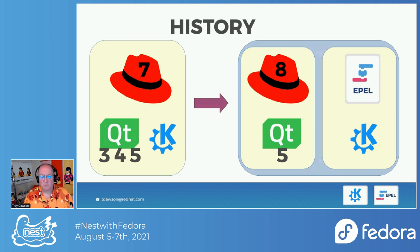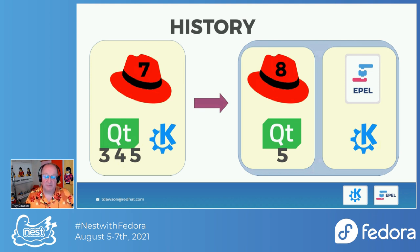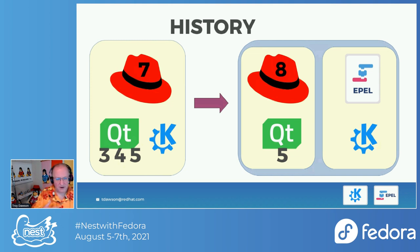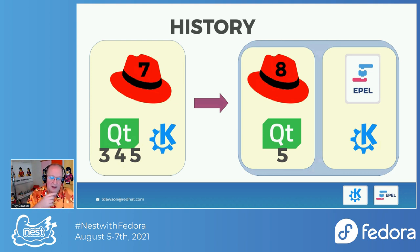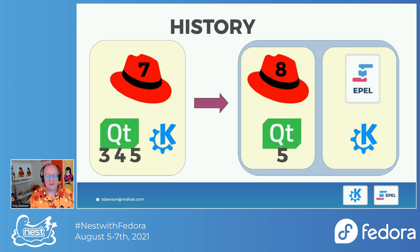The problem is it wasn't very maintained. It wasn't updated at all. And once you got it, after 10 years, the KDE desktop was pretty stale. But it always worked, usually. Part of my job at Red Hat now is I take Fedora and turn it into RHEL. I was part of the team that did this for RHEL 8.